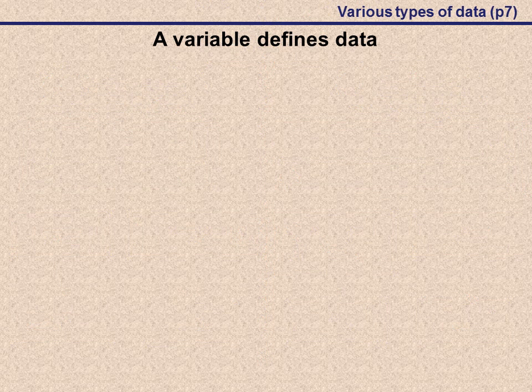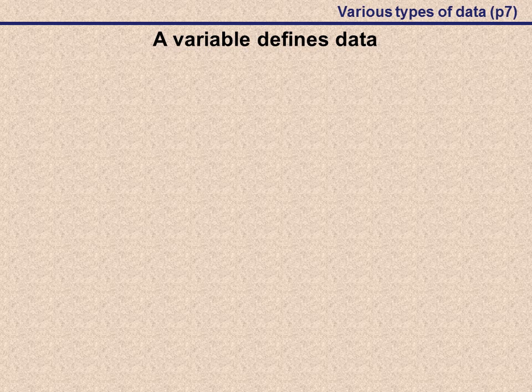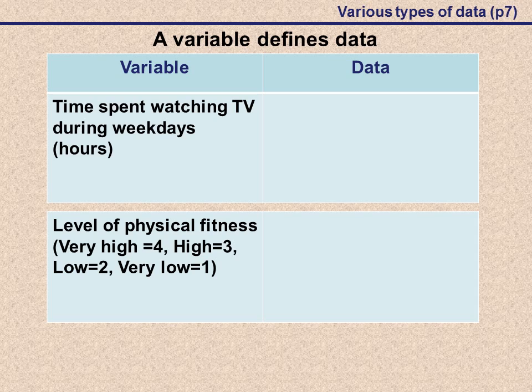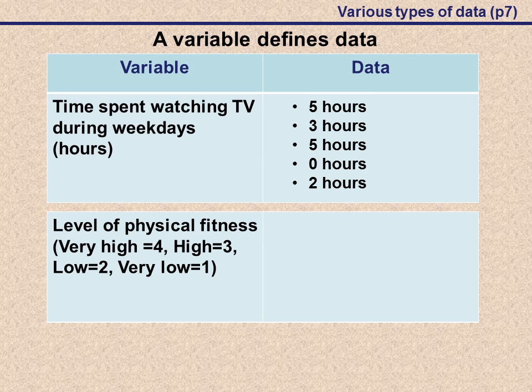It's very important to remember that our variable defines what type of data we are dealing with. If we had a variable, time spent watching TV here in hours, then our data would look something like this. We can have five hours, we can have zero hours, we can have something like 2.5 hours as well. It just depends on how we are collecting our data.